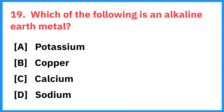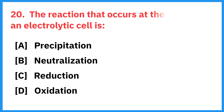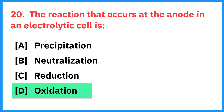Which of the following is an alkaline earth metal? Right answer is calcium. The reaction that occurs at the anode in an electrolytic cell is? Right answer is oxidation.